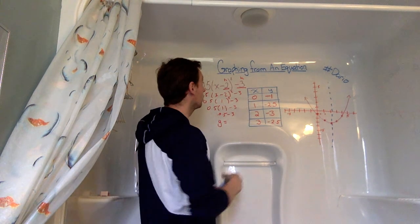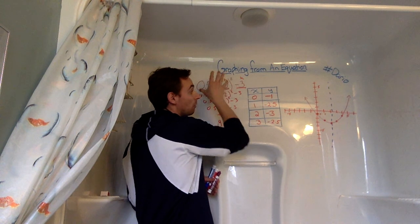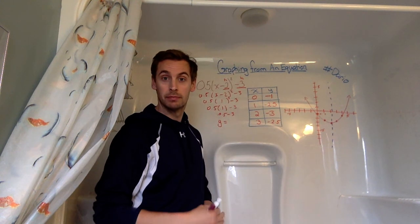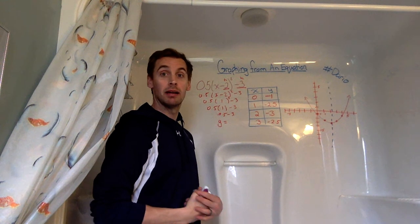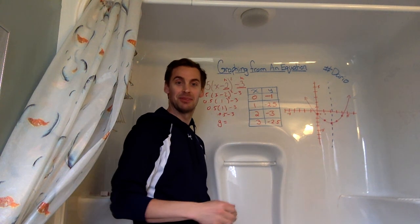And that's a little breakdown on how we take an equation, and we put it onto the Cartesian plane, and create that graph from it. So I hope this helps, and I look forward to our next video. In the Math Tub, with Mr. Elko. Have a great day, take care.